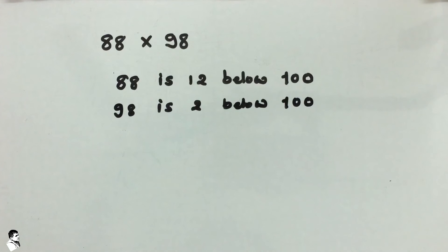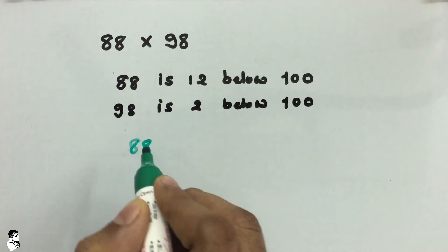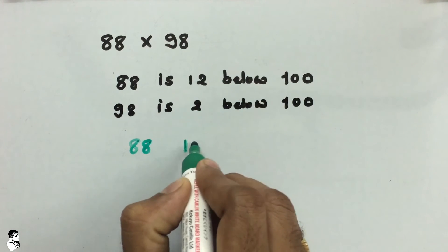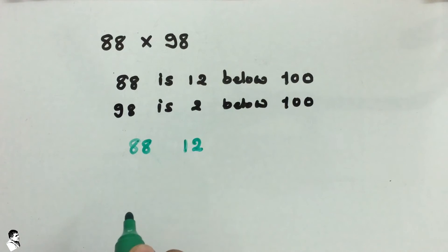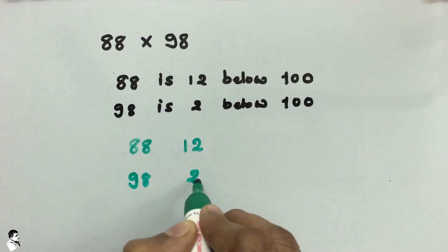Now if you imagine that the sum is set out like this: 88 that is 12 below 100, and 98 that is 2 below 100.